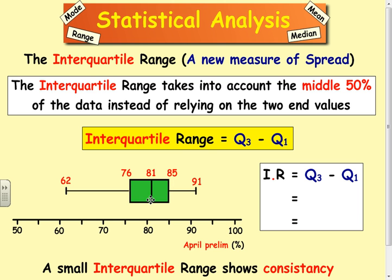We don't use Q2 in the range, it's just Q3, the biggest, take away the smallest. So if you're trying to work it out, I've got 85 take away 76, it's pretty easy, it's 9. Remember and that's what you do.